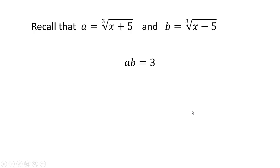Okay, recall that we let a be equal to the cube root of x plus 5 and b be equal to the cube root of x minus 5. So ab equals 3 becomes the cube root of x plus 5 times the cube root of x minus 5 equals 3. Multiplying the radicands, we have the cube root of x squared minus 25 in the left-hand side.